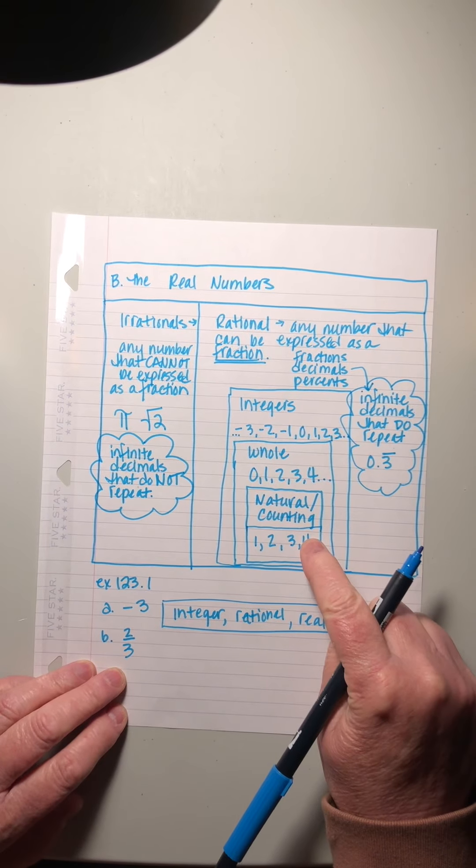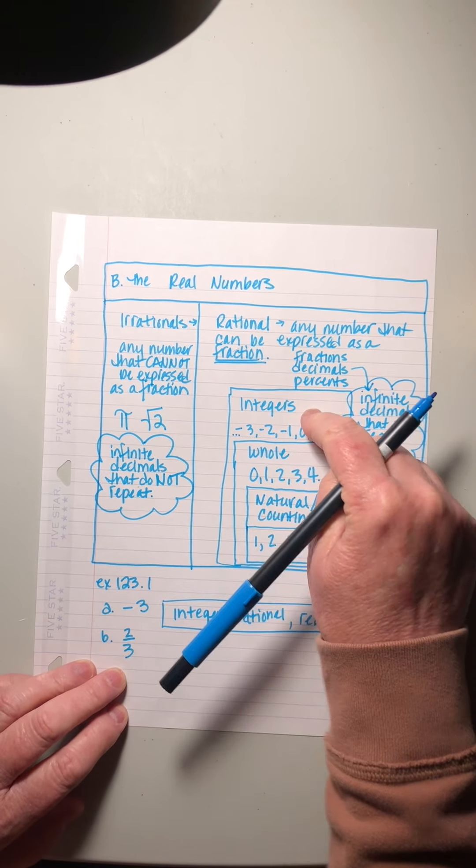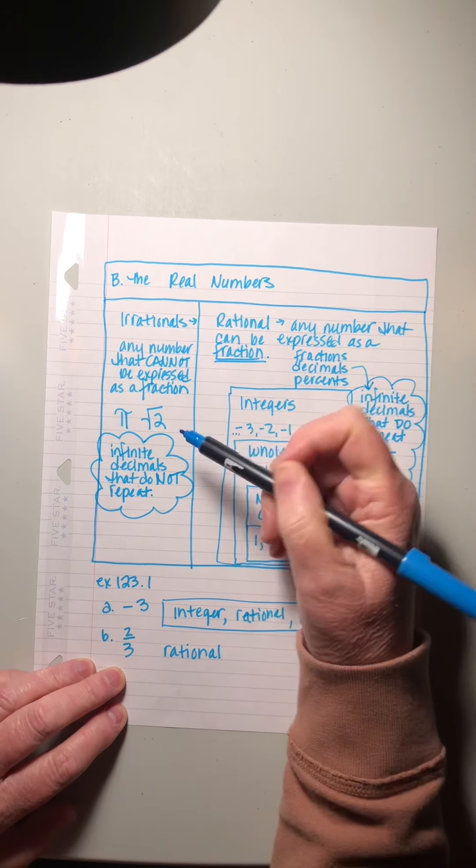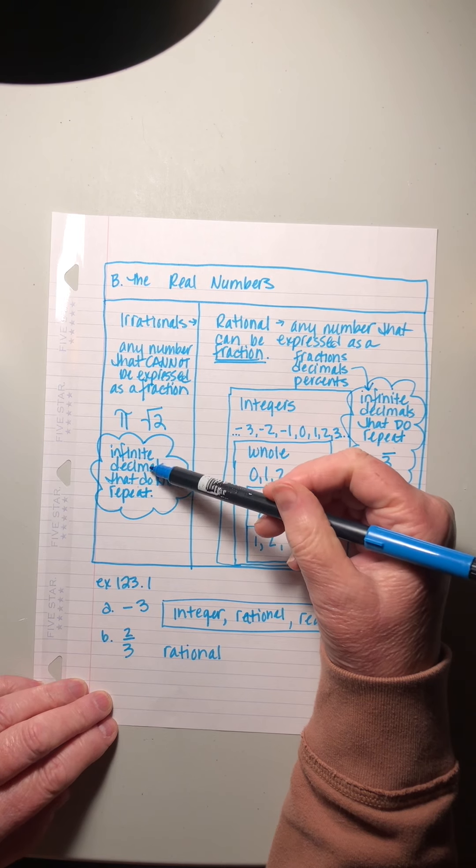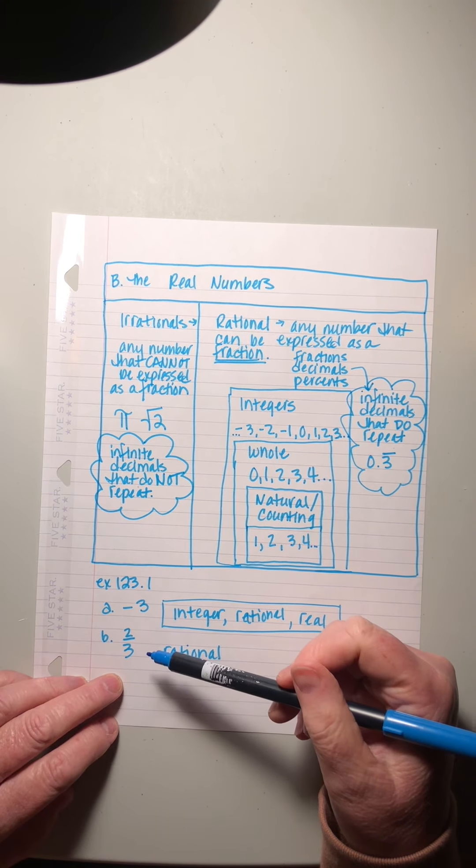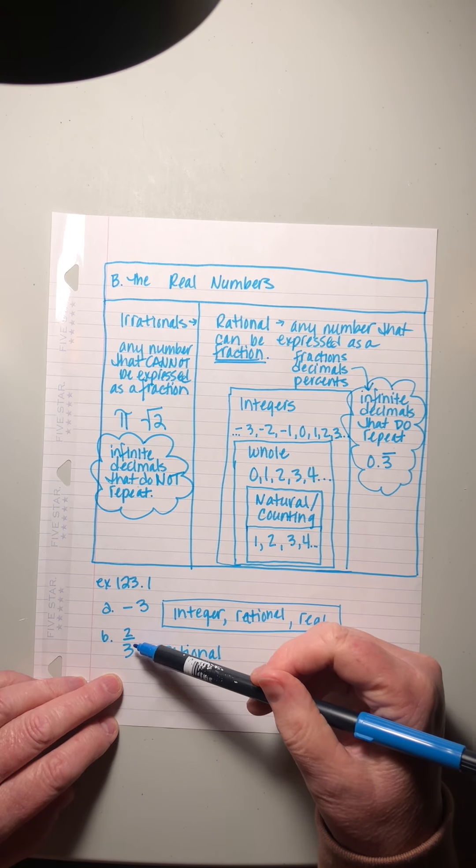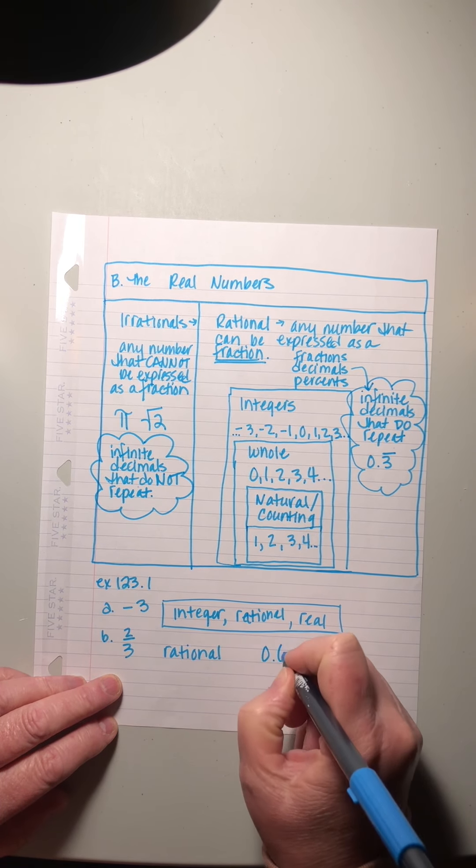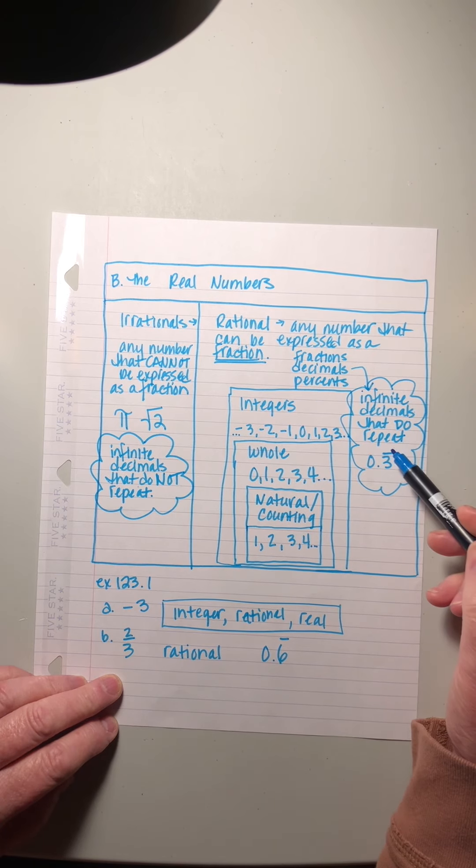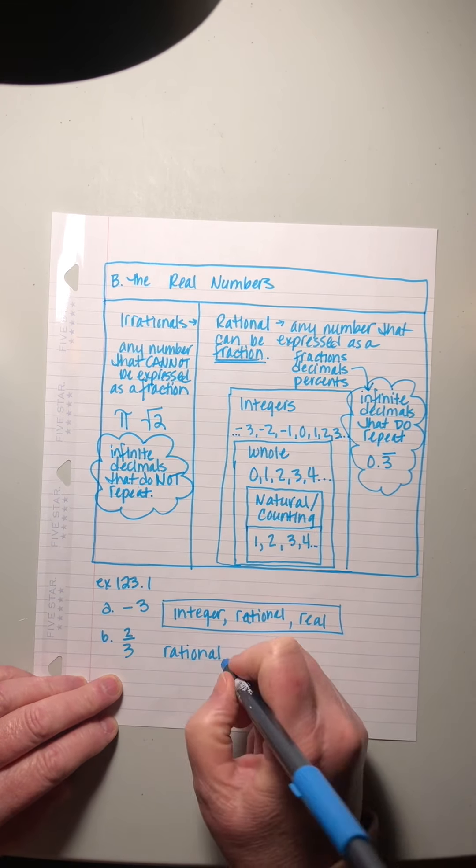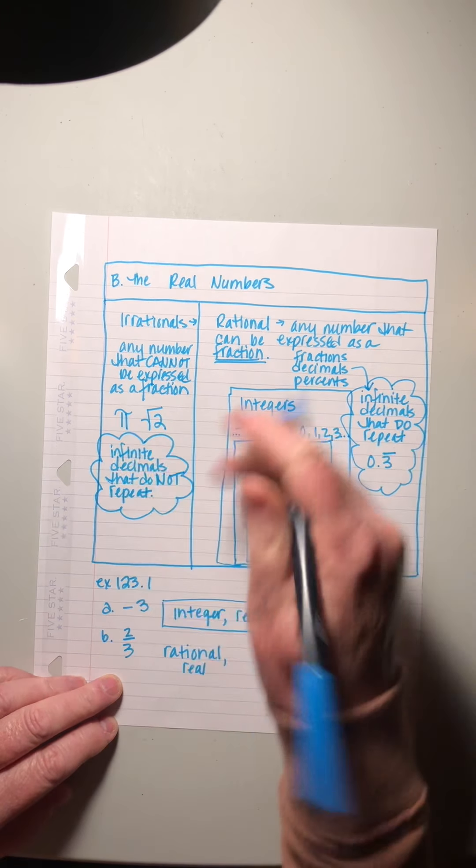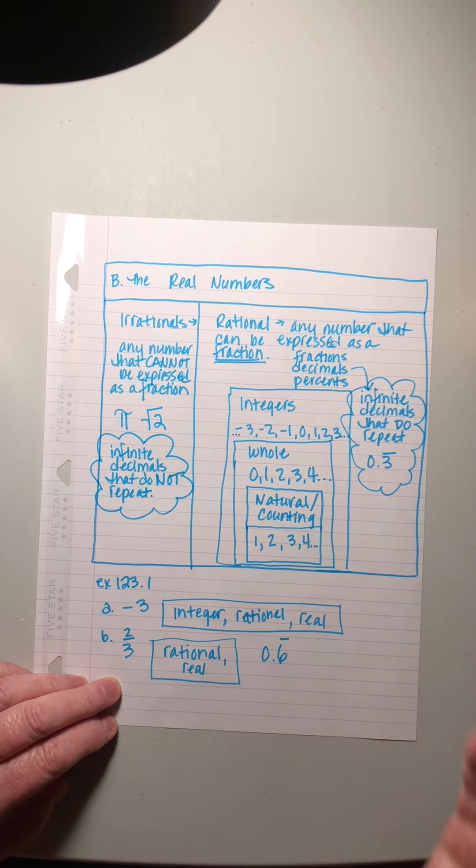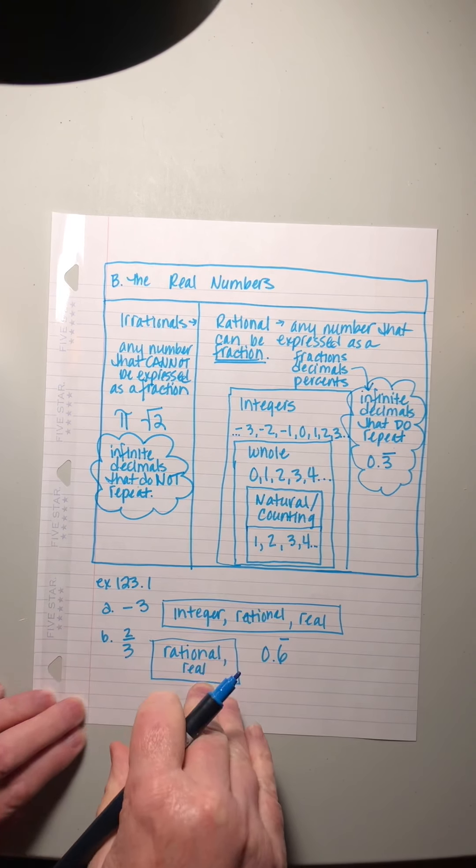What about two thirds? Two thirds is not a counting number. It's not a whole number. It's not an integer. It is a rational, not irrational. We know it's not an irrational because that only includes infinite decimals that do not repeat. This can be written as an infinite decimal, right? It is equal to 0.6 repeating, but it repeats with a pattern. So that makes it a rational. It's not an irrational. So this one is just a rational and it's a real because it fits in this big box. The only numbers that don't fit in the real box are those imaginary numbers that I mentioned, but we haven't learned those yet. We don't have that in our chart.